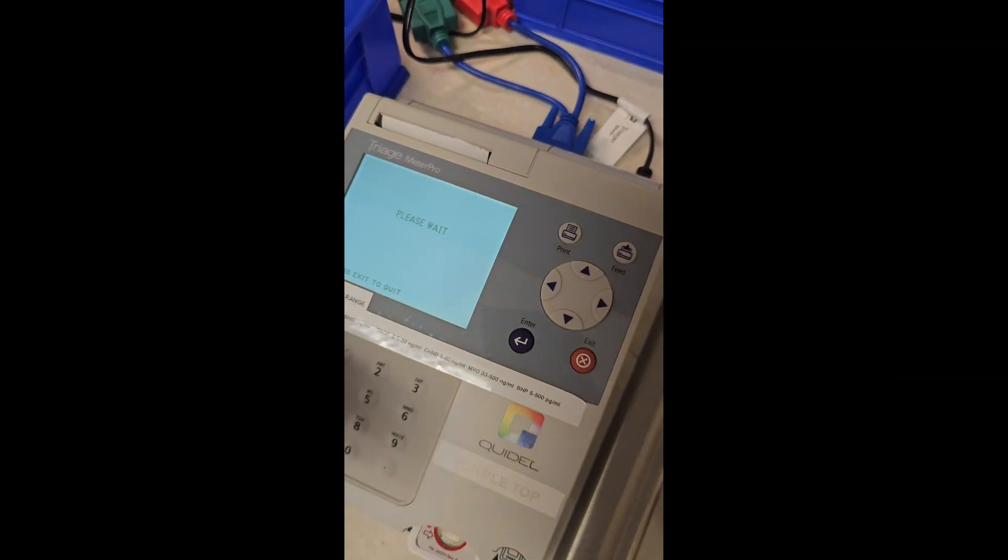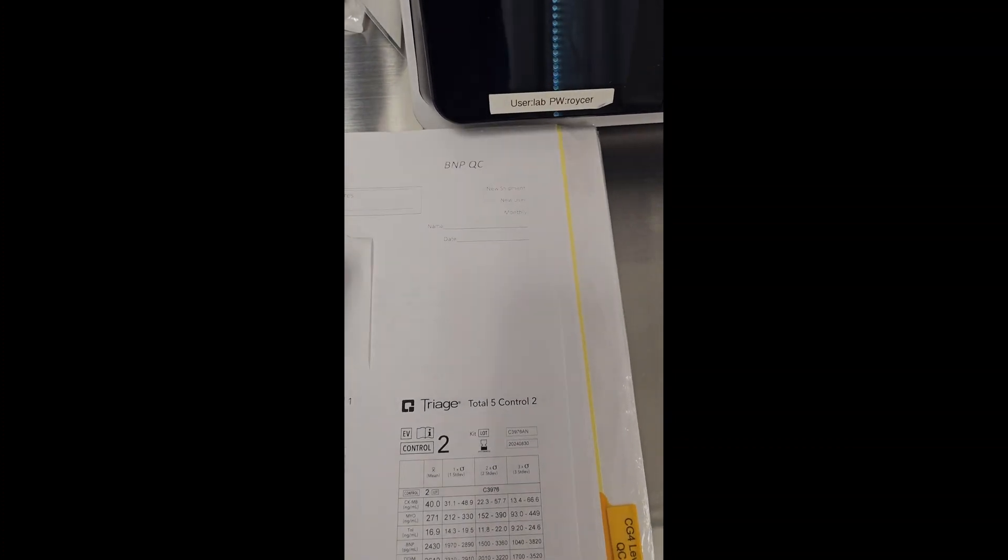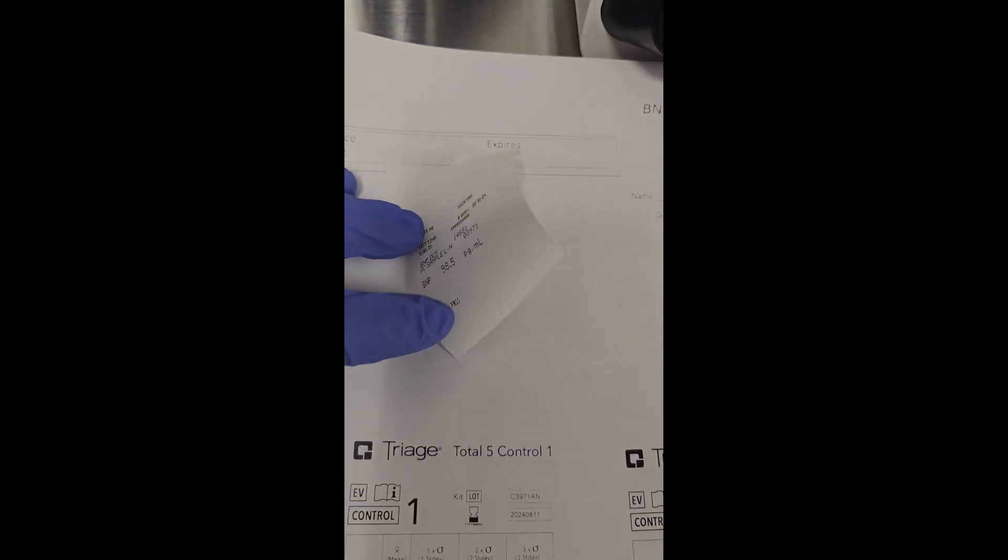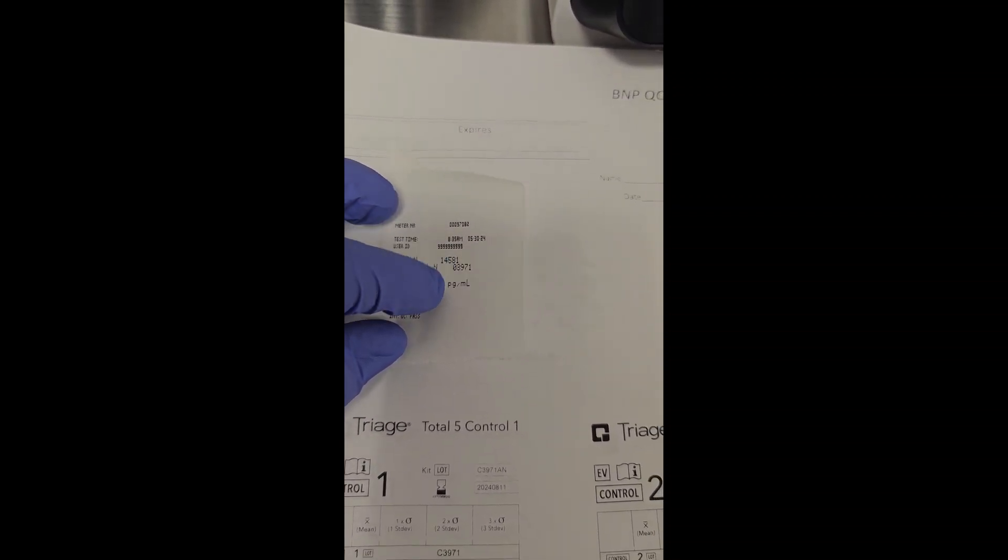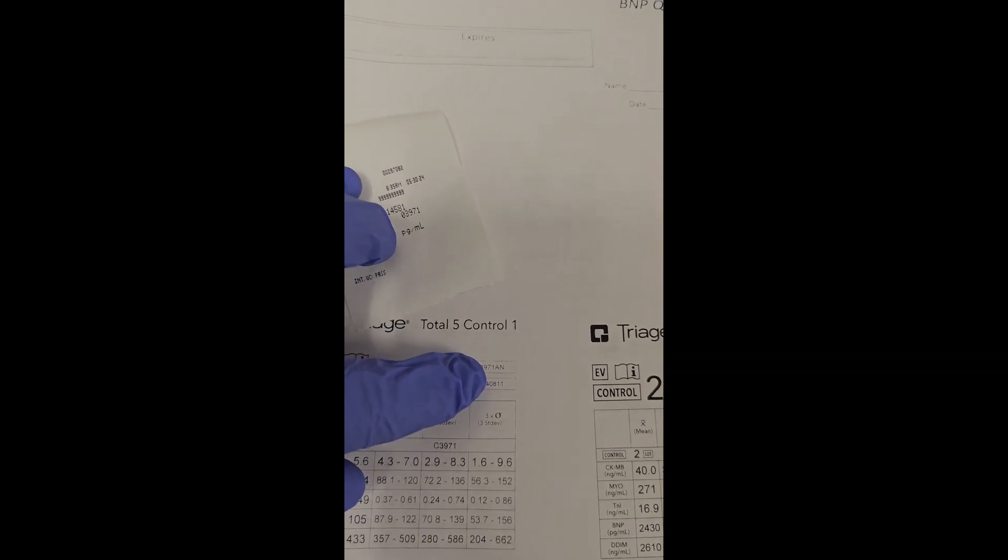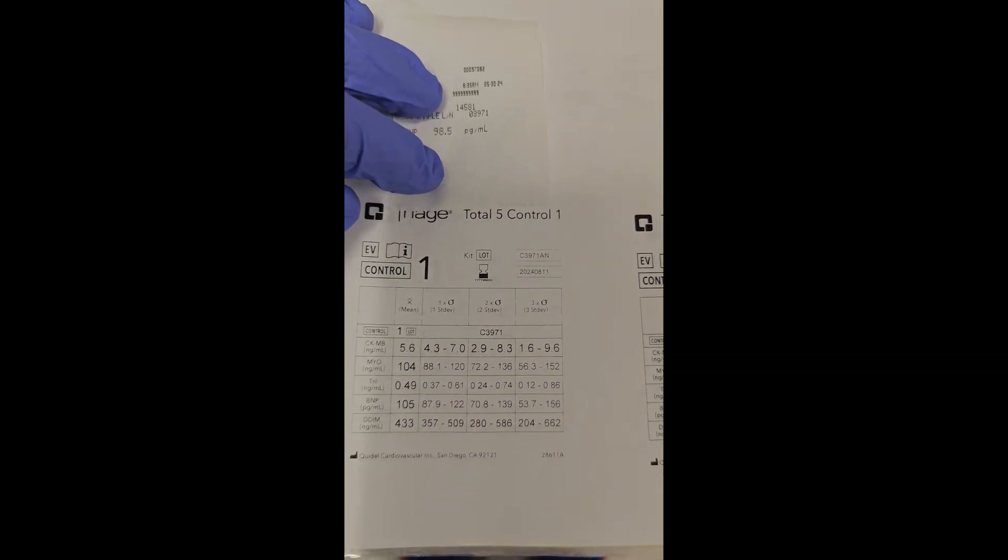That's going to run. Let's take this over here and tape that down. We want to make sure that this lot number, the QC lot number 3971, matches this number 3971, and then we're going to take a look at our results.